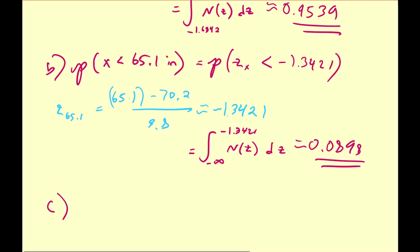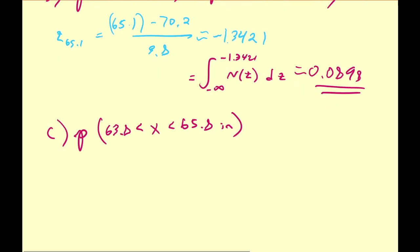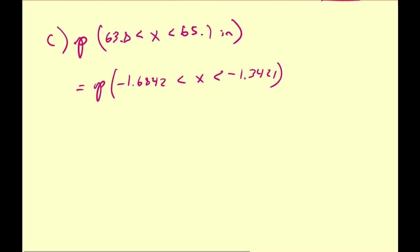As another example, let us assume we want to find the probability that a randomly selected female has a height that is in between 63.8 inches and 65.8 inches. I'm going to start by finding the z-scores for each of them. This is the same as the probability that the z-score is in between negative 1.6842 and negative 1.3421. So we have negative 1.6842 and negative 1.3421 — not drawn to scale, just trying to give an idea.